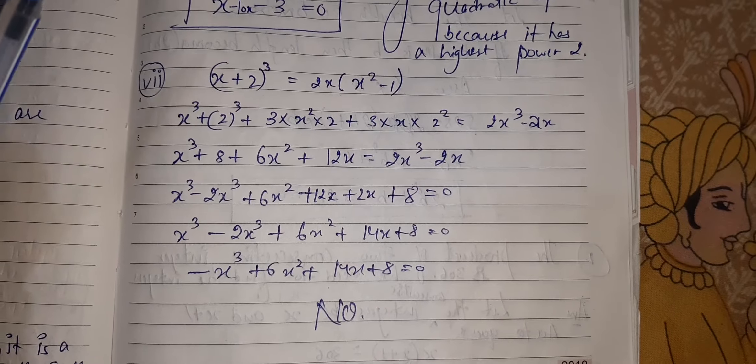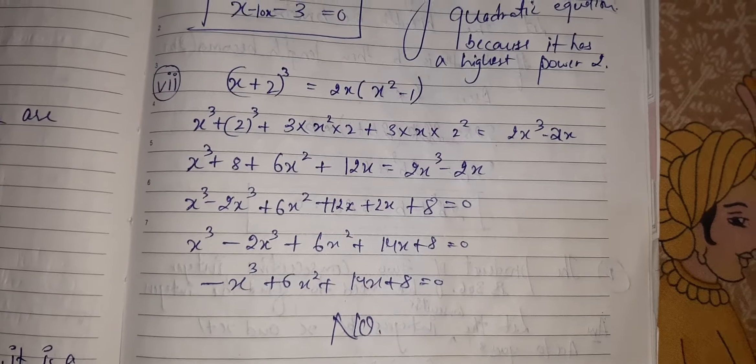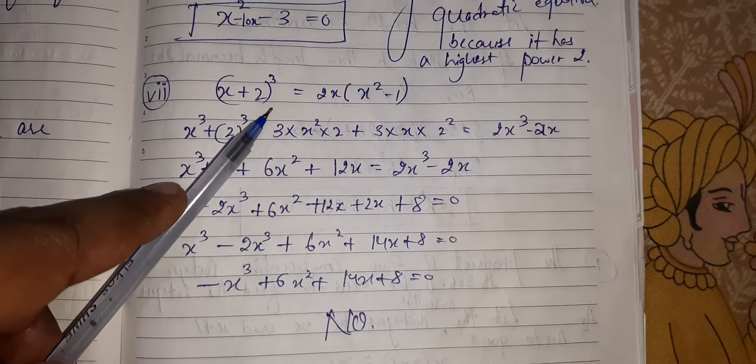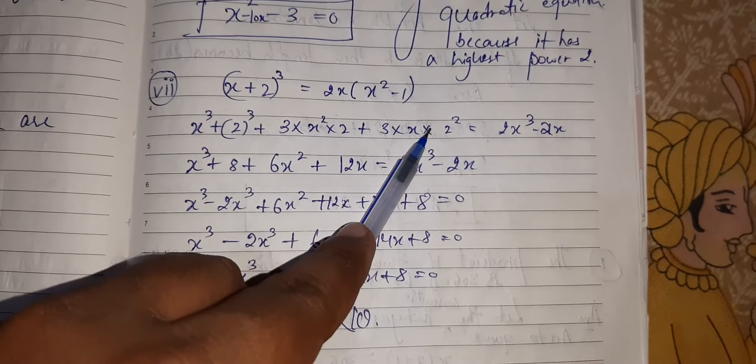The next part. The part which I have not done it for you, you have to do it as homework. Okay. X plus 2 whole cube is equal to 2X, X squared minus 1.